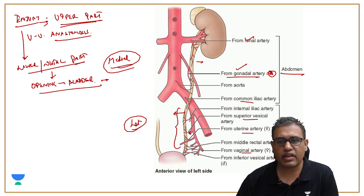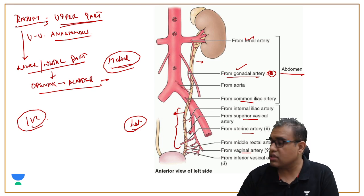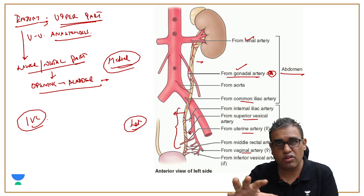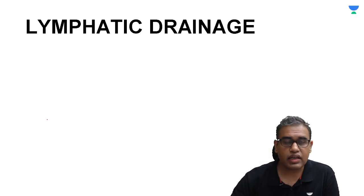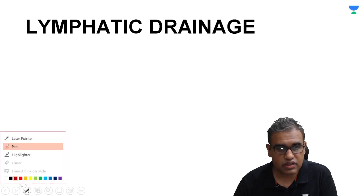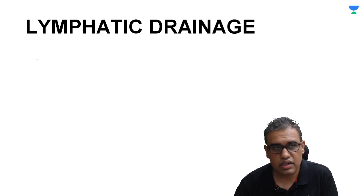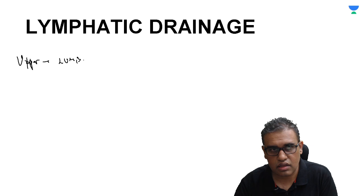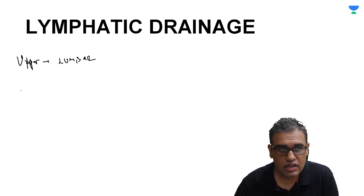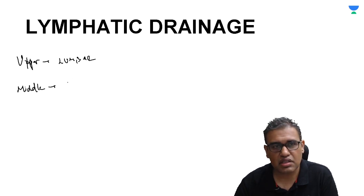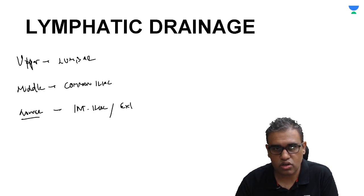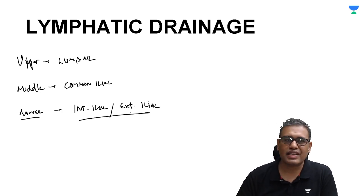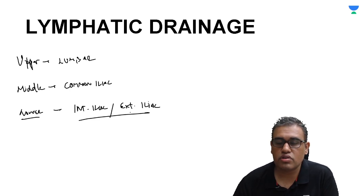Venous supply drains to the IVC. Lymphatic drainage follows the blood supply: the upper ureter drains to lumbar lymph nodes; the middle ureter to common iliac lymph nodes; the lower ureter (being pelvic) drains to internal and external iliac lymph nodes. There is no single lymph node group, reflecting the varied blood supply along the ureter's length.